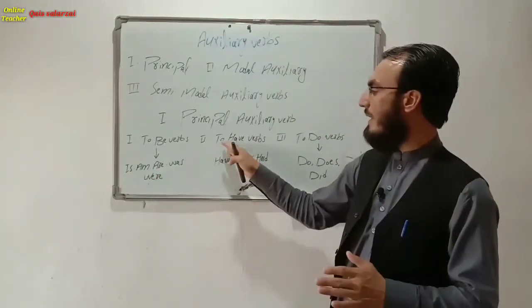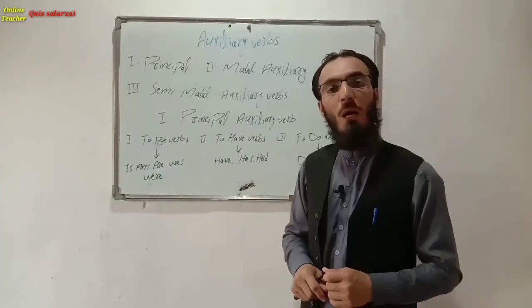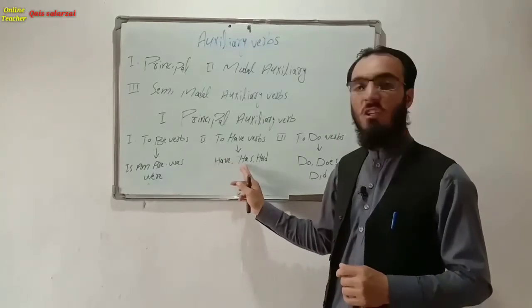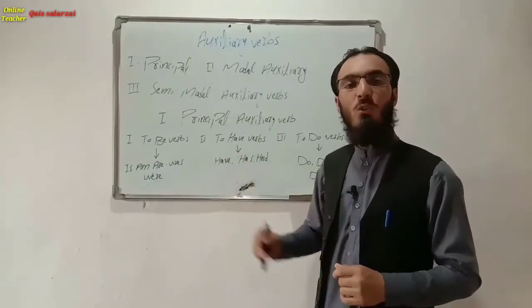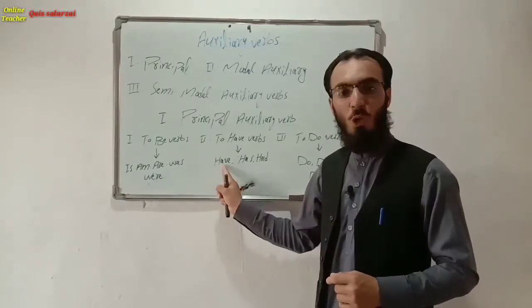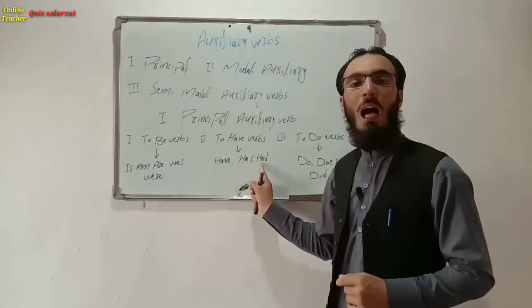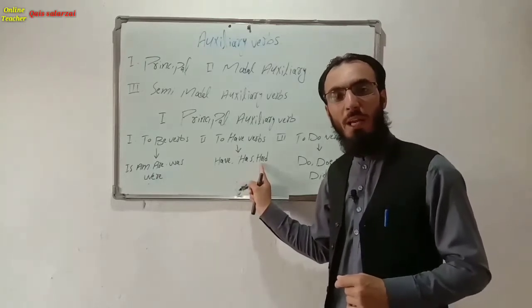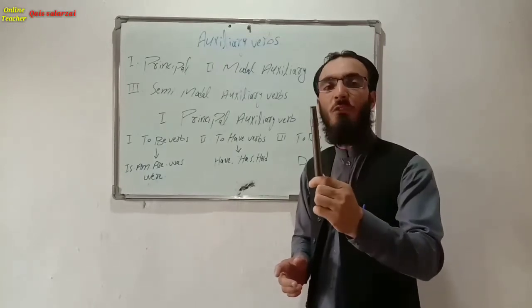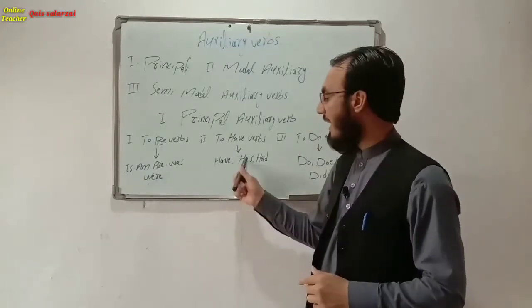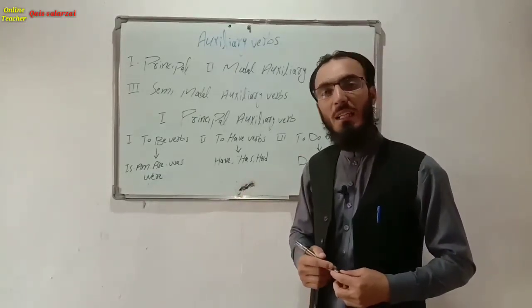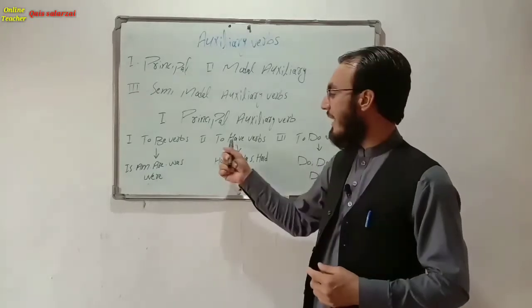The second type is to have verbs. We have only three in English: have, has, and had. They are used to show possession or ownership. We use 'have' for plural, 'has' for singular, and 'had' for both plural and singular. For example: I have a pen, she has a car, we had a ball some days ago.